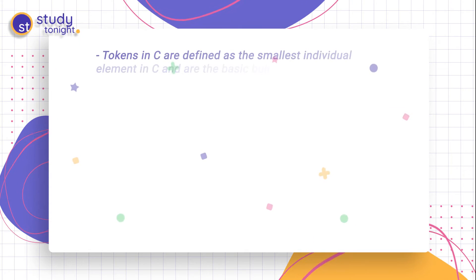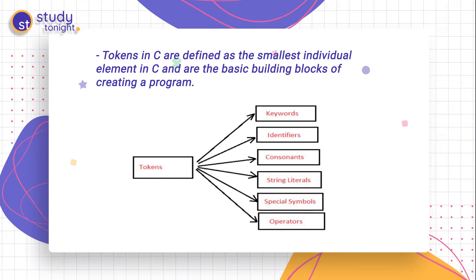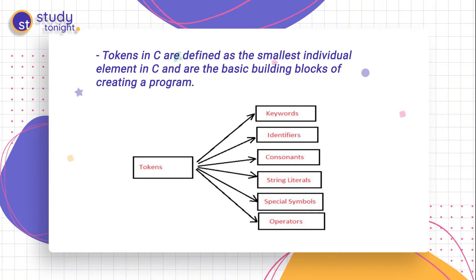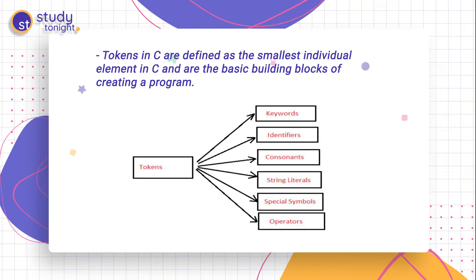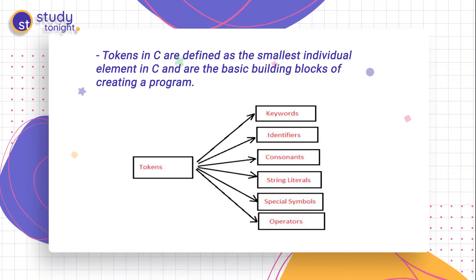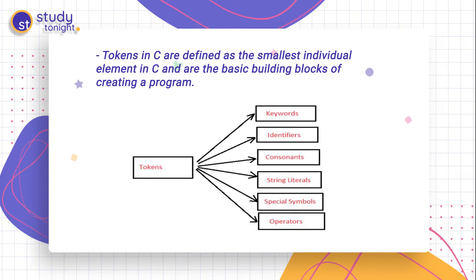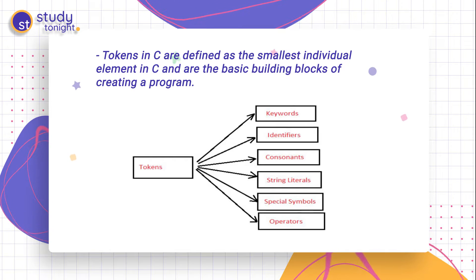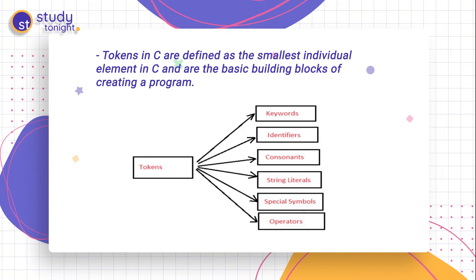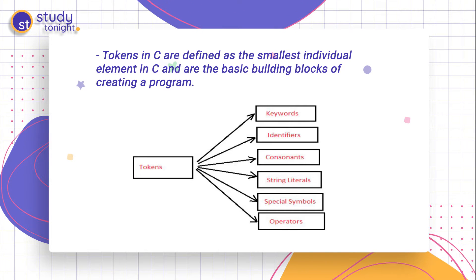The first topic that we are going to discuss is tokens. What are tokens? Tokens in C are basically defined as the smallest individual element in C. Even a single comma or a single brace is also a token. The smallest individual unit is the token, and these are the basic building blocks of creating a program.